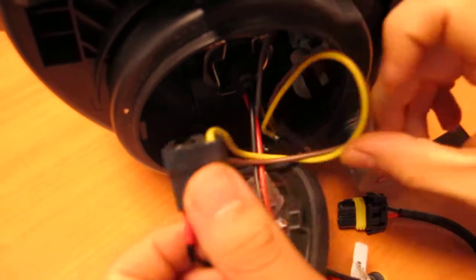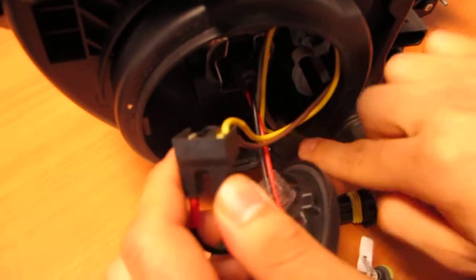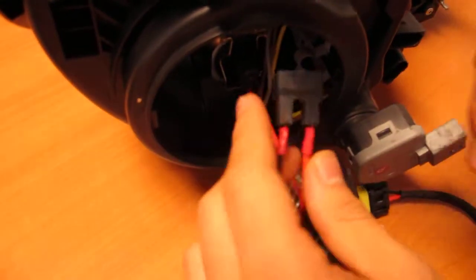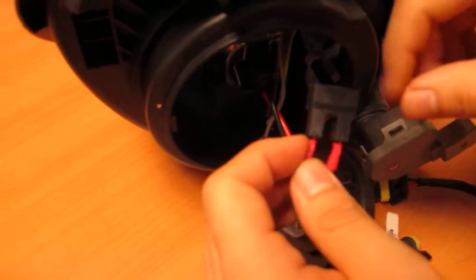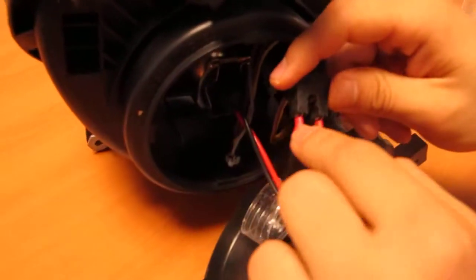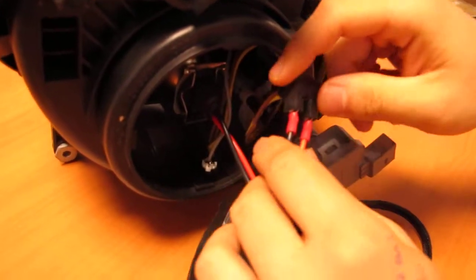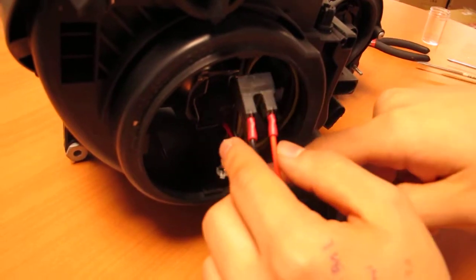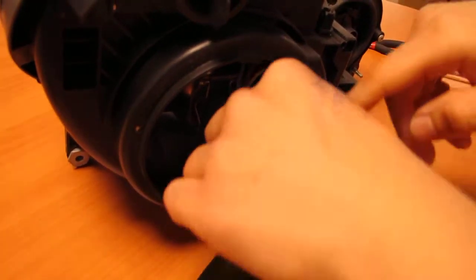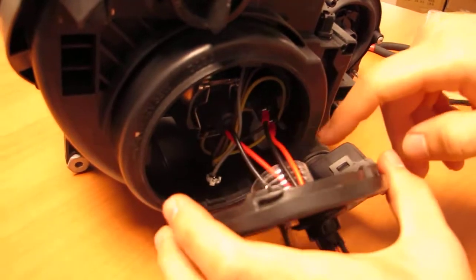Once you have that connected securely, it's another great recommendation if you have electrical tape to go ahead and wrap this around with electrical tape just to ensure that any exposed pins won't be able to touch any of the metal fixtures inside the housing causing a short.